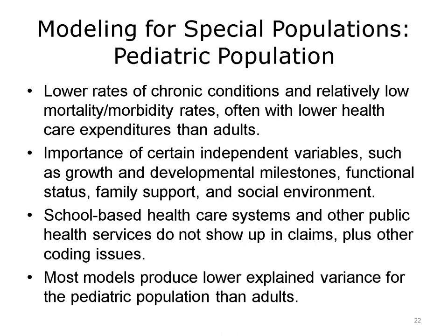Modeling for special populations requires expertise and extra attention to potential pitfalls. In the pediatric population, the following issues may affect the development of predictive models: the pediatric population generally has a lower rate of chronic conditions and relatively lower mortality and morbidity rates, plus lower healthcare expenditures than adults. Certain independent variables such as growth and development milestones, functional status, family support, and social environment are critical in defining different risk groups. Pediatric population health is also affected by school-based healthcare systems and other public health services that do not show up in claims, bringing other coding issues. Generally, most predictive models produce lower explained variance for the pediatric population than adults.